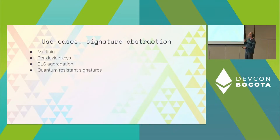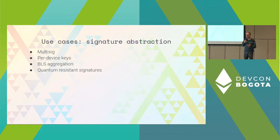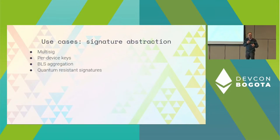Multi-sig is something we want to have for accounts. Another option is per-device keys. Your phone is a very strong piece of hardware for protecting keys, so it's easy for phone protection—whether fingerprint or other biometric—to control your account. If you lose the device, you have recovery. You can assign another device as your wallet signer. These are per-device keys.